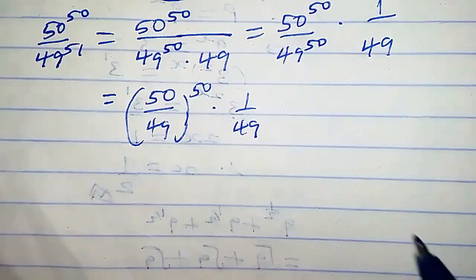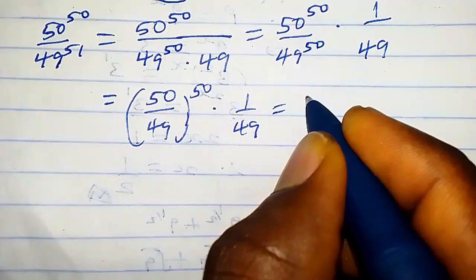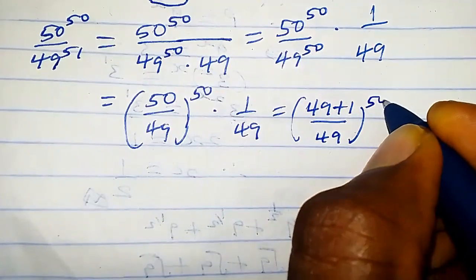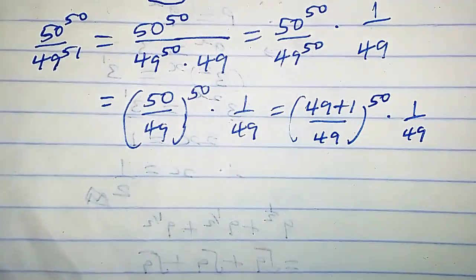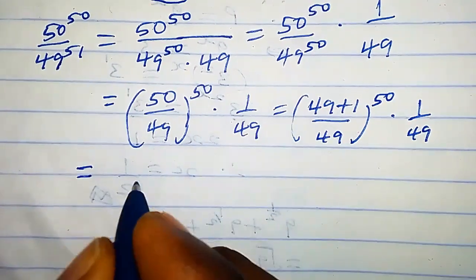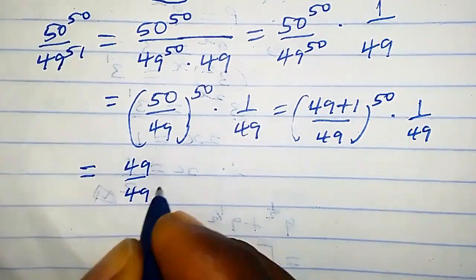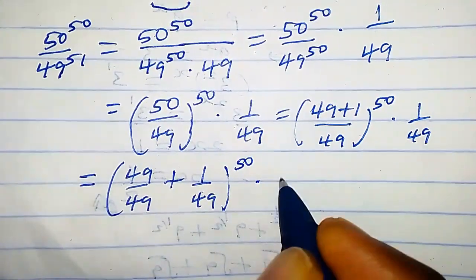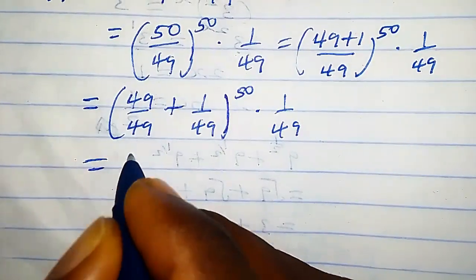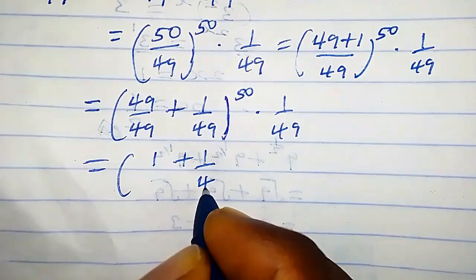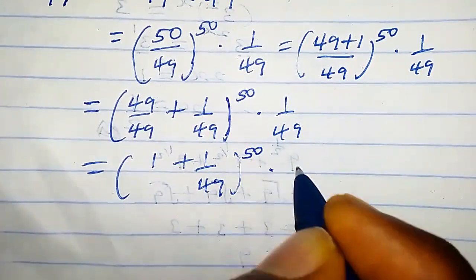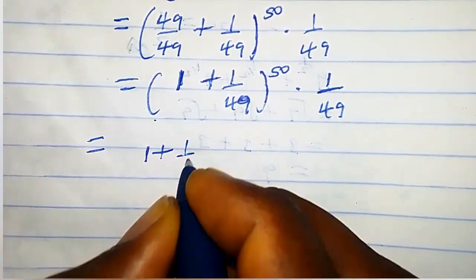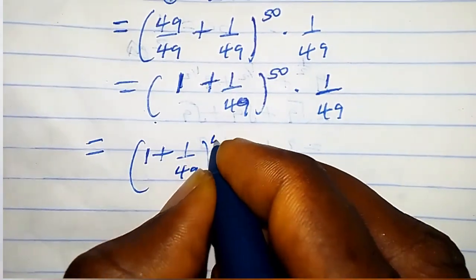Now let's consider this 50. We can write it as 49 plus 1 over 49 times 1 over 49. This equals 49 over 49 plus 1 over 49 times 1 over 49. We could write it as (1 plus 1 over 49) to the power 49 times (1 plus 1 over 49) times 1 over 49.